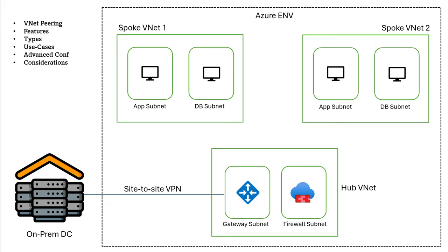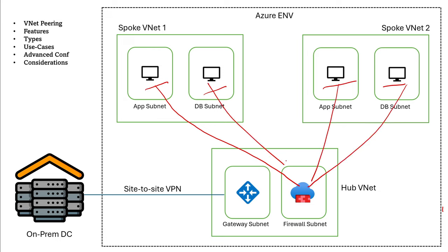The third advanced option is service chaining. In service chaining, traffic from all subnets travels through a network virtual appliance so that auditing and monitoring can be done at a centralized place. To achieve this, you need a network virtual appliance, Azure firewall, or another firewall. All spoke networks or virtual networks should be connected to the hub network where the firewall subnet resides, with peering connections in place. You then define user-defined routes so that traffic from all subnets travels to the hub virtual network where the firewall is located. You can enable intrusion detection or prevention on the firewall and enable monitoring to observe all traffic going to and from it.